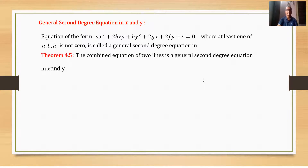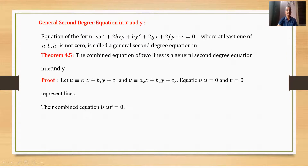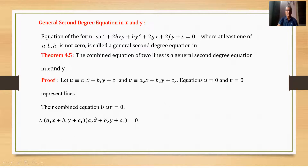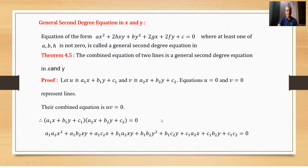The theorem states that the combined equation of two lines is a general second-degree equation in x and y. Consider the first line u = 0 and second line v = 0. These represent lines, and therefore their combined equation is u·v = 0. Substituting the equations of the first and second lines and simplifying gives the general form.